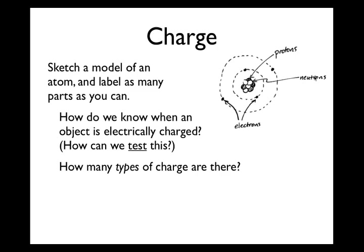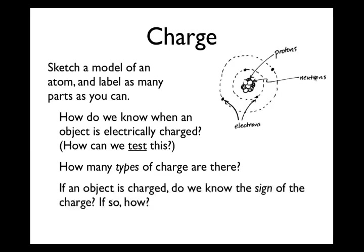How many types of charge are there? There is thought to be just two types of charge. Because in physics we want to use the tools of mathematics to describe nature, we've found it convenient to consider one of those charges to be positive and the other to be negative. It turns out the choice that was made to call electrons negative and protons positive was a little bit unfortunate — a small bit of our life would be easier if people had considered electrons to be positive and protons to be negative, but we're stuck with the convention that was established.